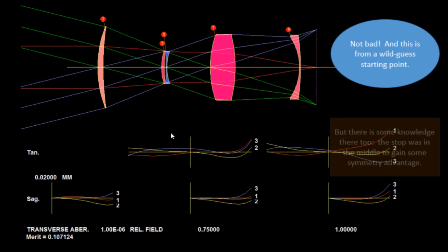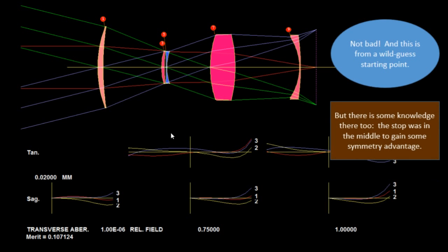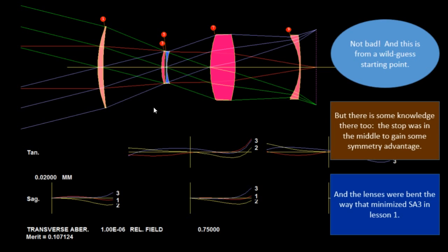But there's some knowledge there, too. Because when I started, I put the stop in the middle. So this is something like symmetry, which has some benefits. And the lenses were bent in the same direction that we used to minimize spherical aberration back in Lesson 1.